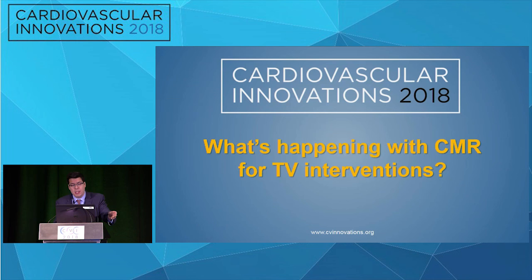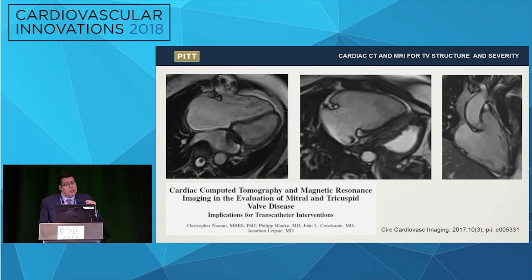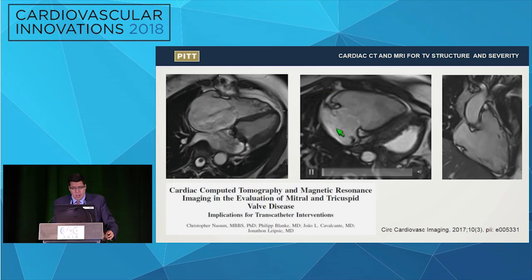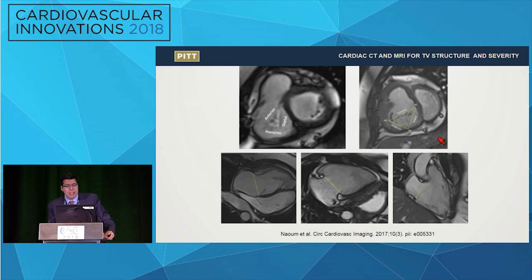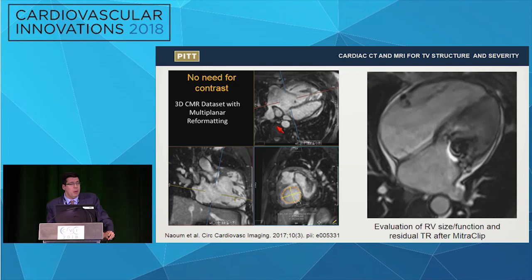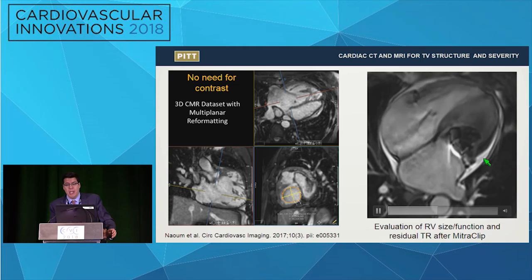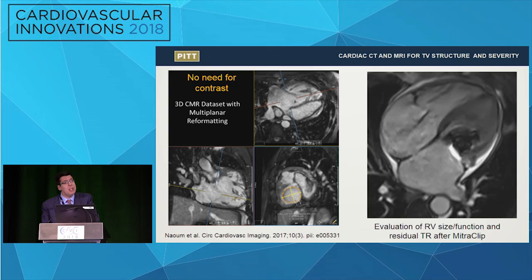Importantly, CMR is capable of quantifying tricuspid regurgitation despite the presence of a pacemaker. Using end-diastolic and systolic volumes: if the ventricle squeezed 102 mL but only 42 mL left through the pulmonary artery by flow measurement, then 60 mL regurgitated back into the right atrium — that's the tricuspid regurgitation volume. Dividing 60 by 102 gives a tricuspid regurgitation fraction consistent with severe tricuspid regurgitation.